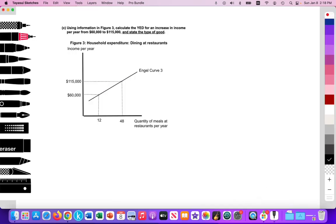So here we have the question that you might see on a paper 3 type of exam. Using information in the figure, figure 3, calculate YED for an increase in income per year. So income is rising from $60,000 a year to $115,000 a year. And then we need to state the type of good.